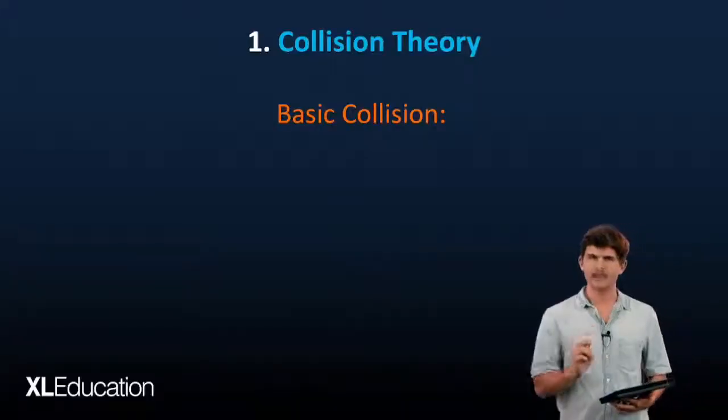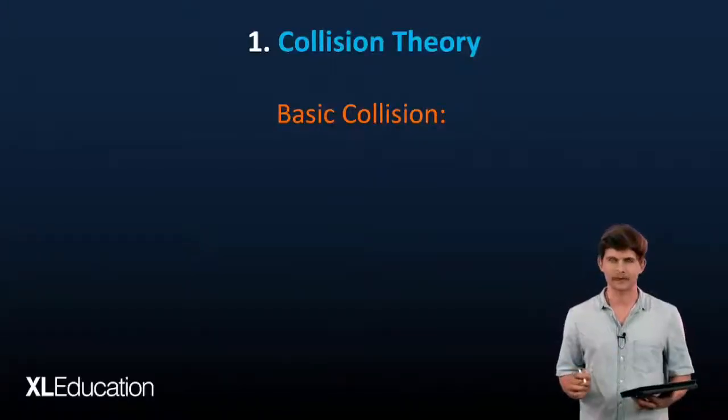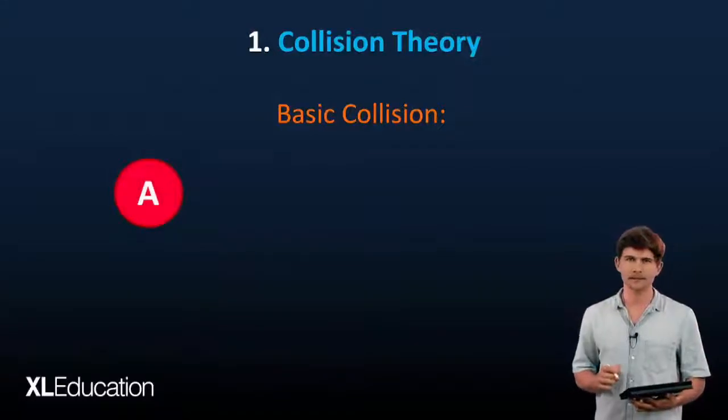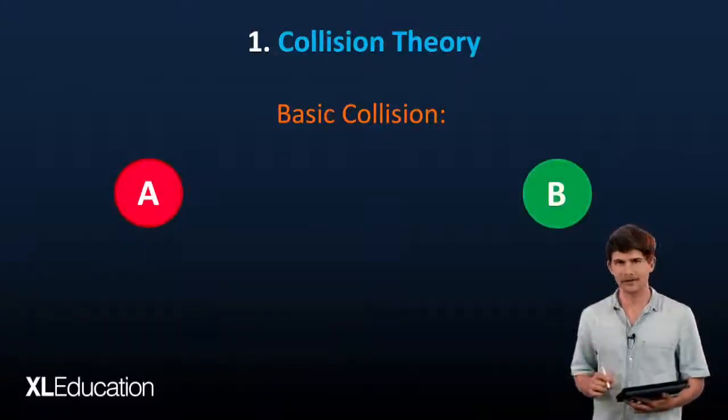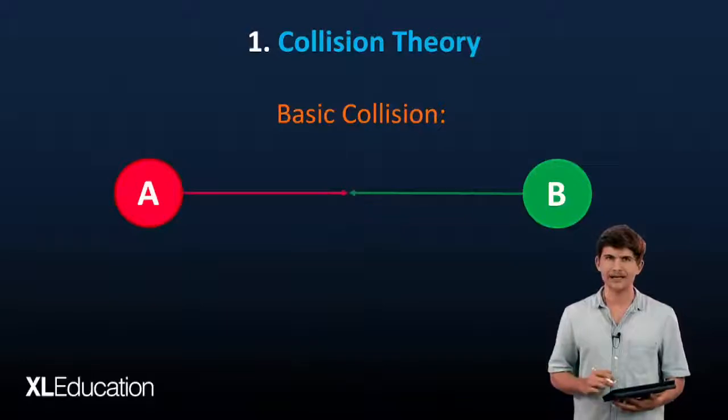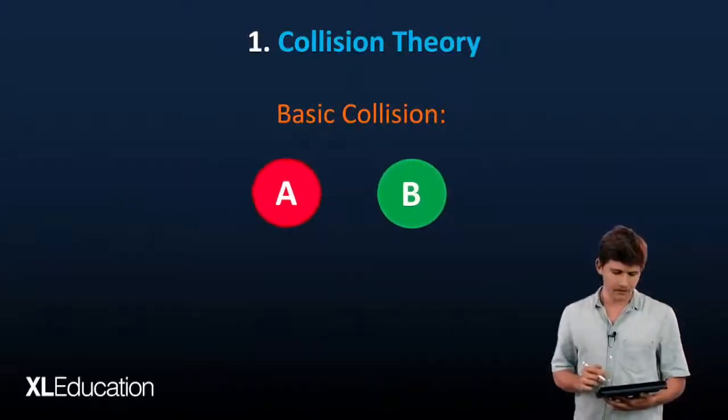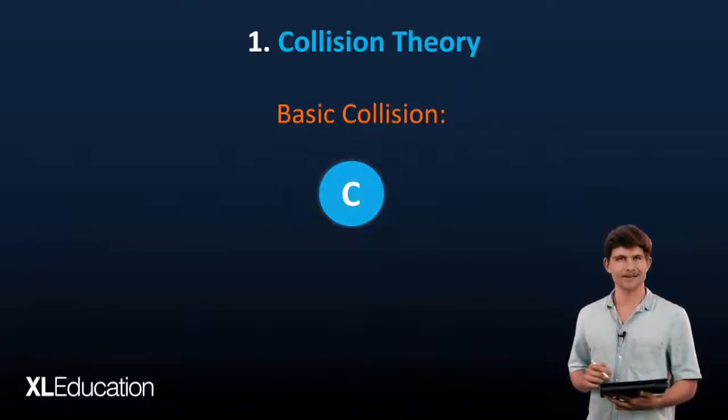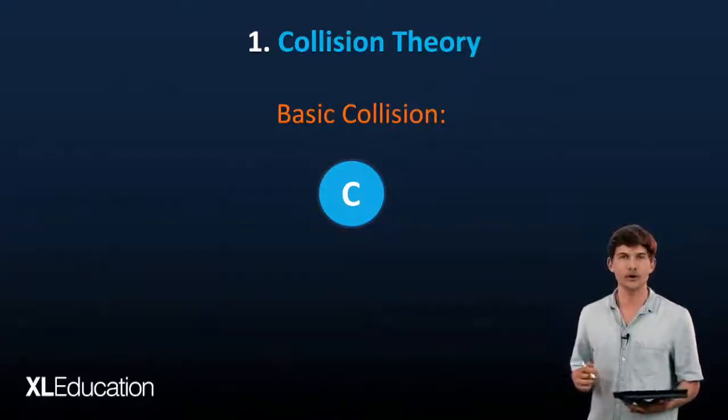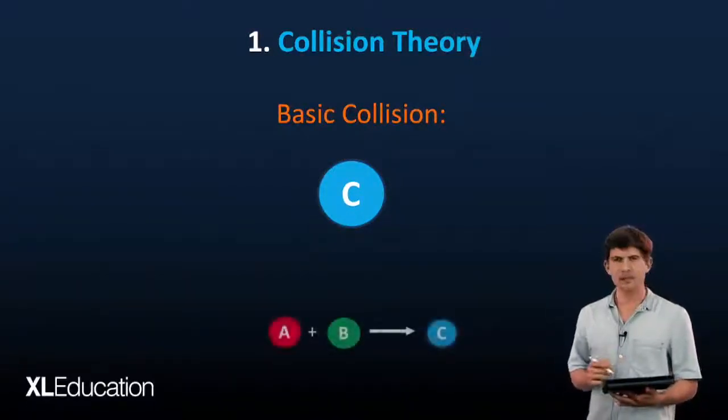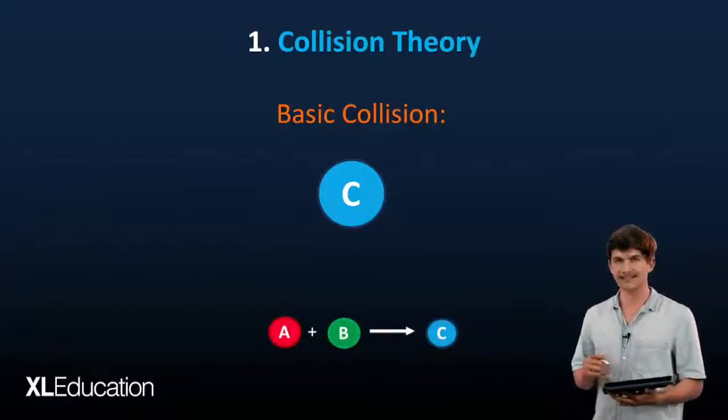So basic collisions, what do they need to happen? Firstly, you need particle A. Secondly, you need particle B. And thirdly, you need a collision. So let's see what happens when A and B collide. Oh, C. And out of nowhere, we now have a new molecule. So let's keep in mind that was A plus B to give us C.